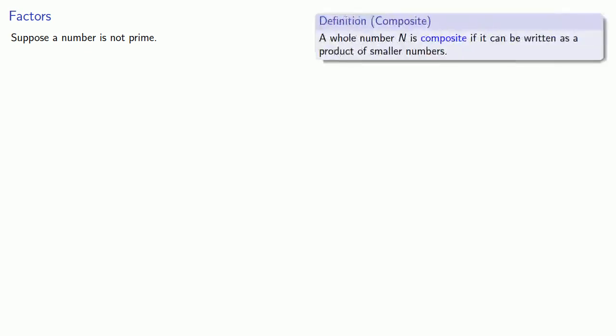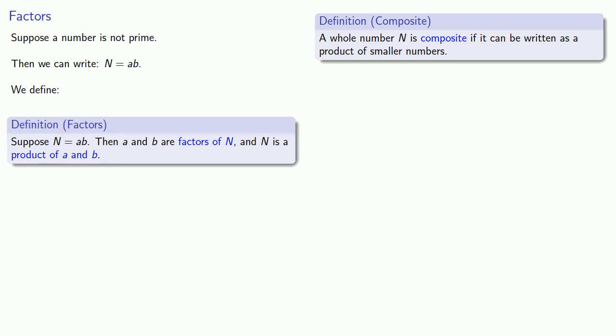So let's look at those composite numbers. Suppose a number is not prime. Definitions are the whole of mathematics, so remember not being prime is the same as being composite, and the composite number can be written as a product of smaller numbers. So if our number is not prime, we can write our number N as the product A times B. And we define factors as follows. Suppose N is equal to A times B, then we say that A and B are factors of N, and we also say that N is a product of A and B.